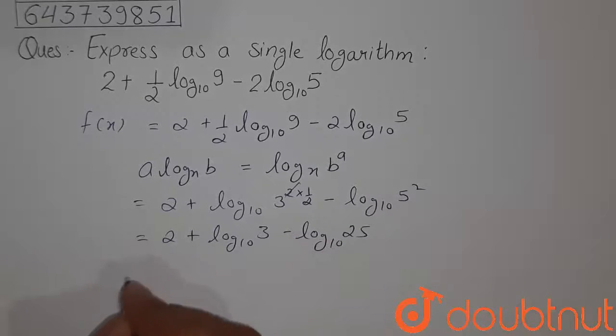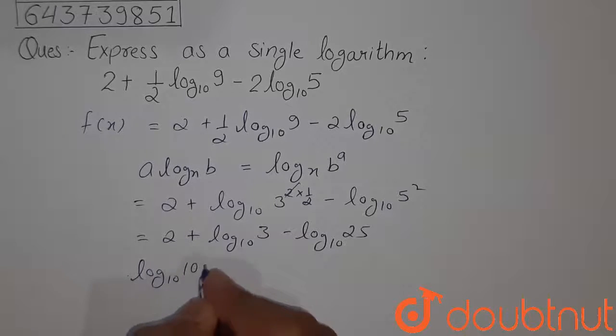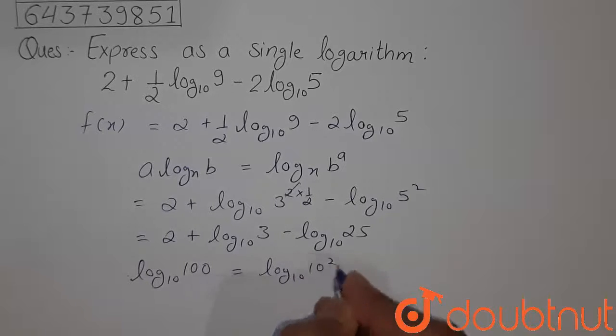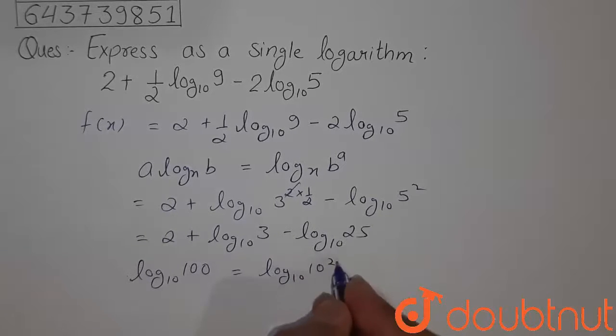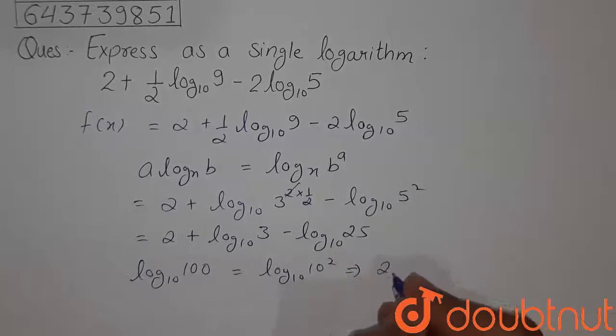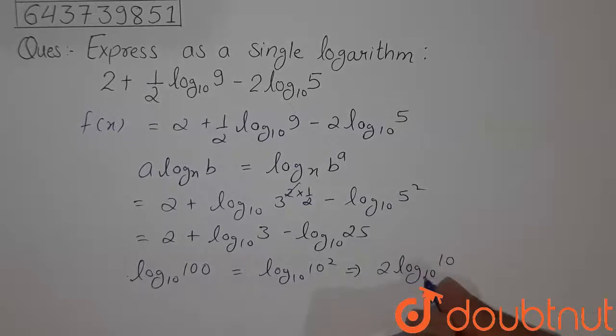Now we know that log to the base 10, 100 can be written as log to the base 10, 10 square. So when this happens, this power will come in the front of the log. So this can be written as 2 log to the base 10, 10.